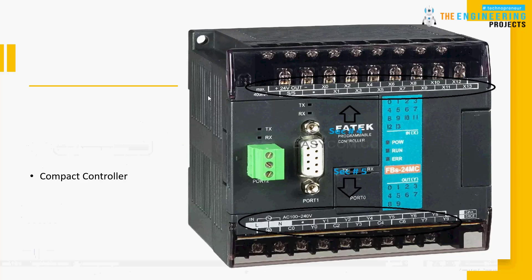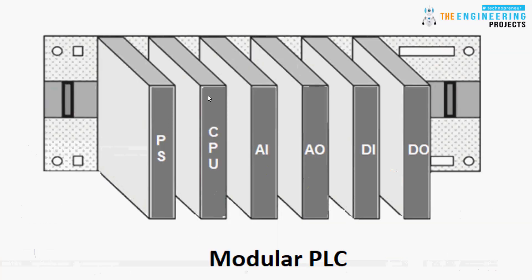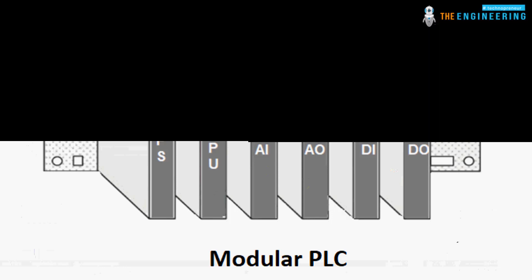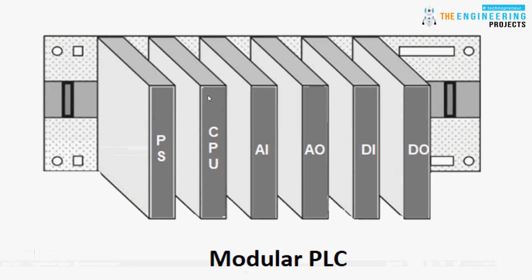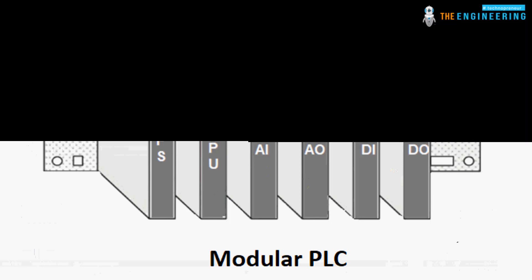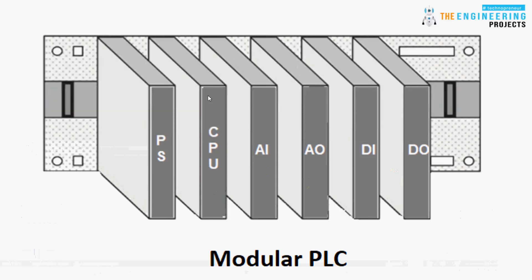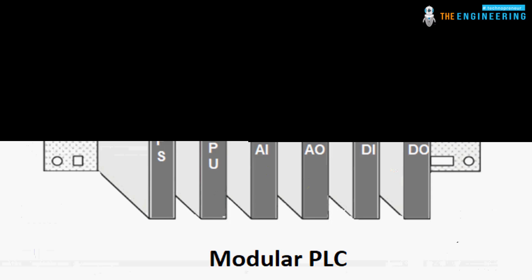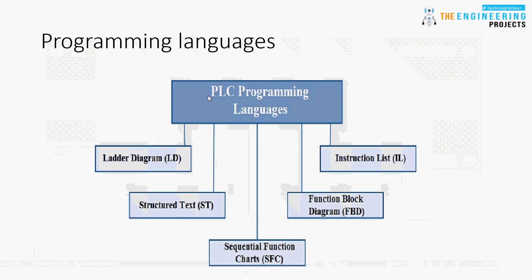But if we have hundreds of inputs and outputs, what do we do? That's why there is another type: the modular PLC. In the modular type, components are not embedded in one box. Instead, you have racks, and each rack contains modules. You have several racks - each rack has a separate power supply, and there is one CPU for all racks. You then have analog input, analog output, digital input, and digital output modules across different racks, all connected using expansion cables. By this way you can combine these racks to handle thousands of IOs for a very large project.